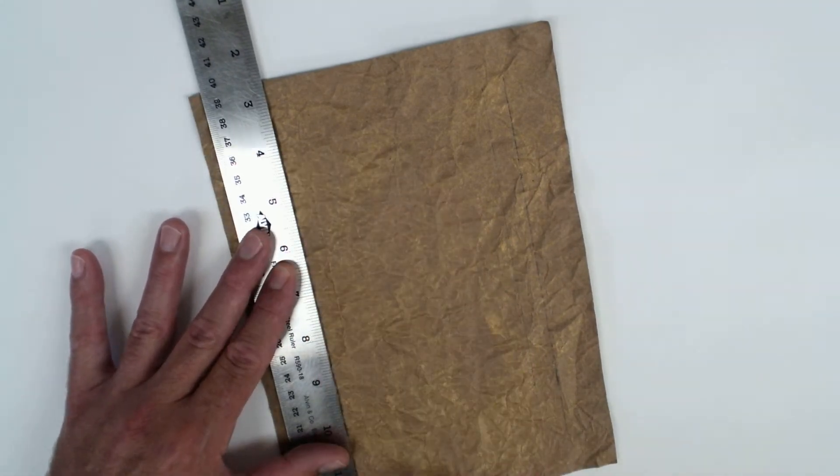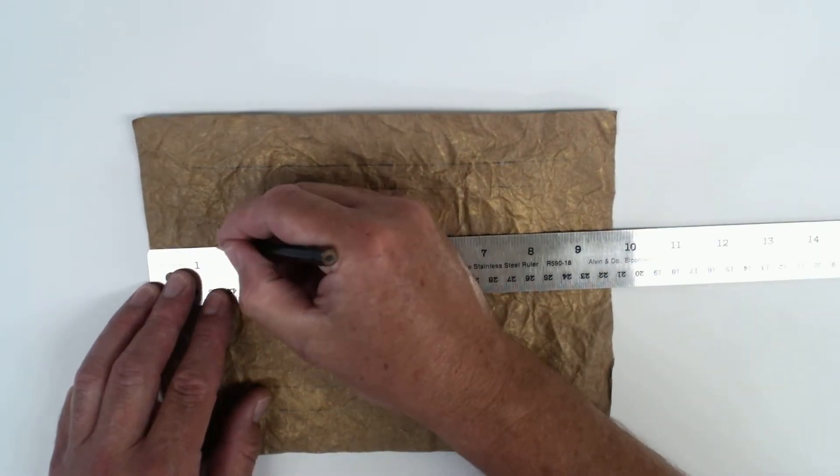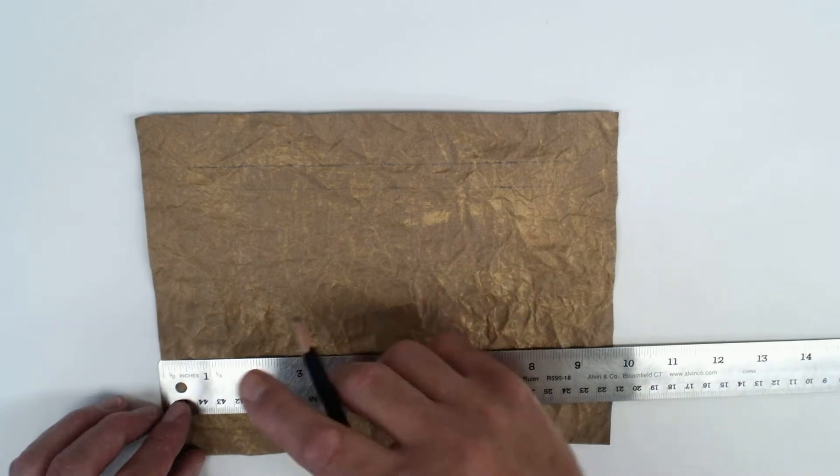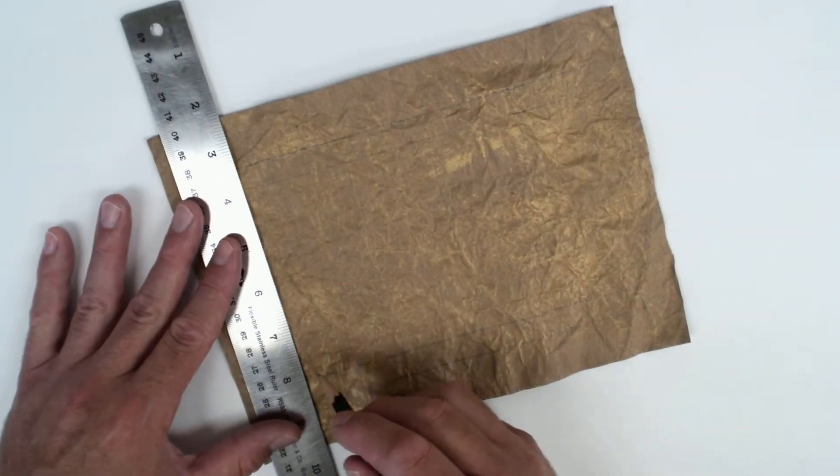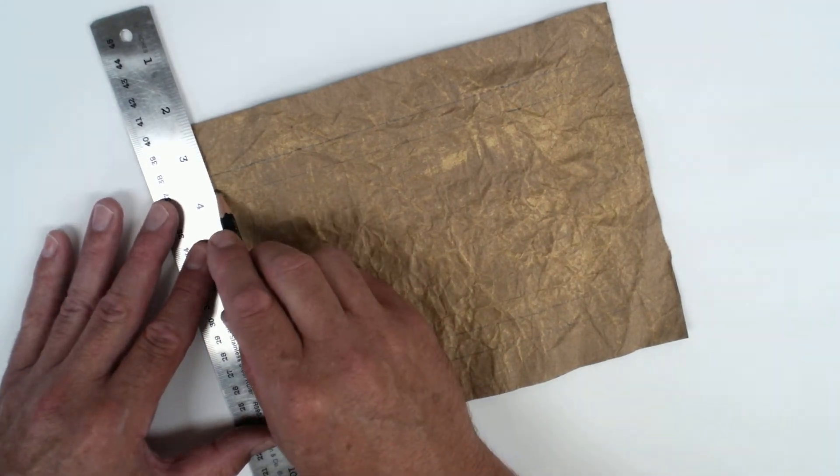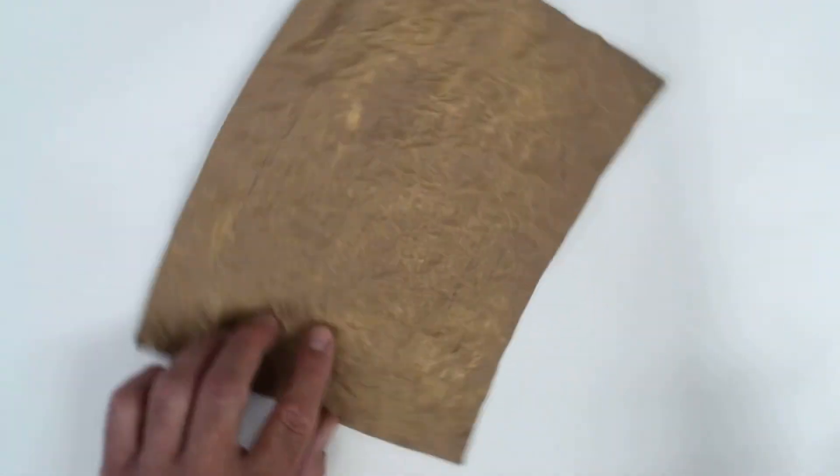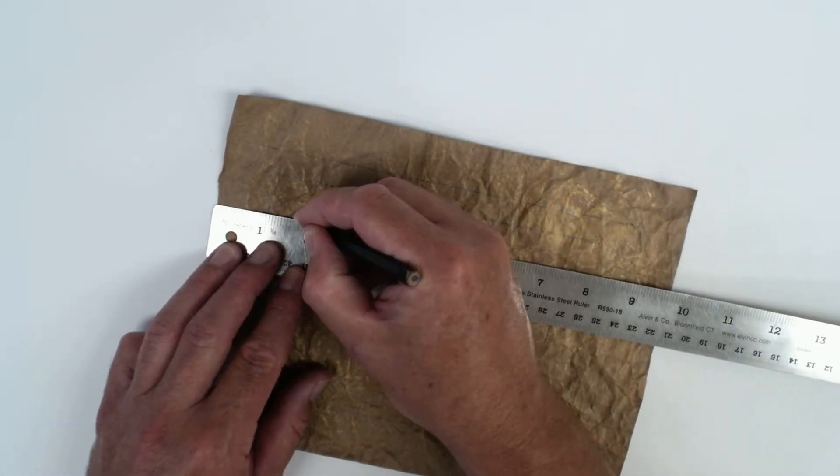It does get a little tedious because you're going to have to do this four times for each side of your paper. One inch, half inch, one inch, half inch there. And we're going to put this here, take that right there. So essentially we're creating a nice little box, finishes it off, makes it look really good.